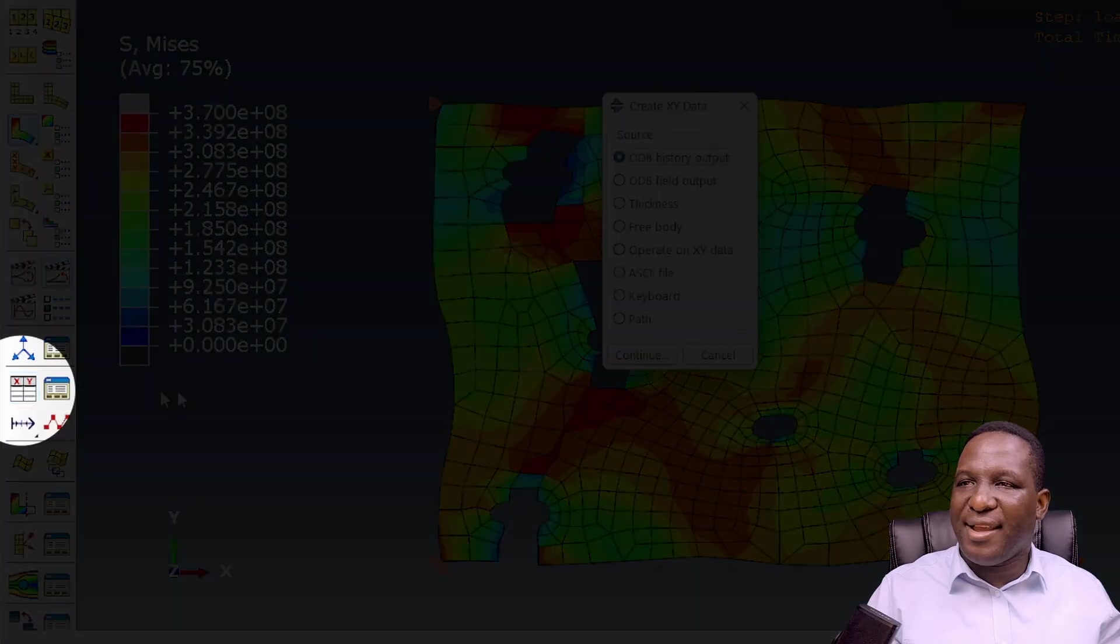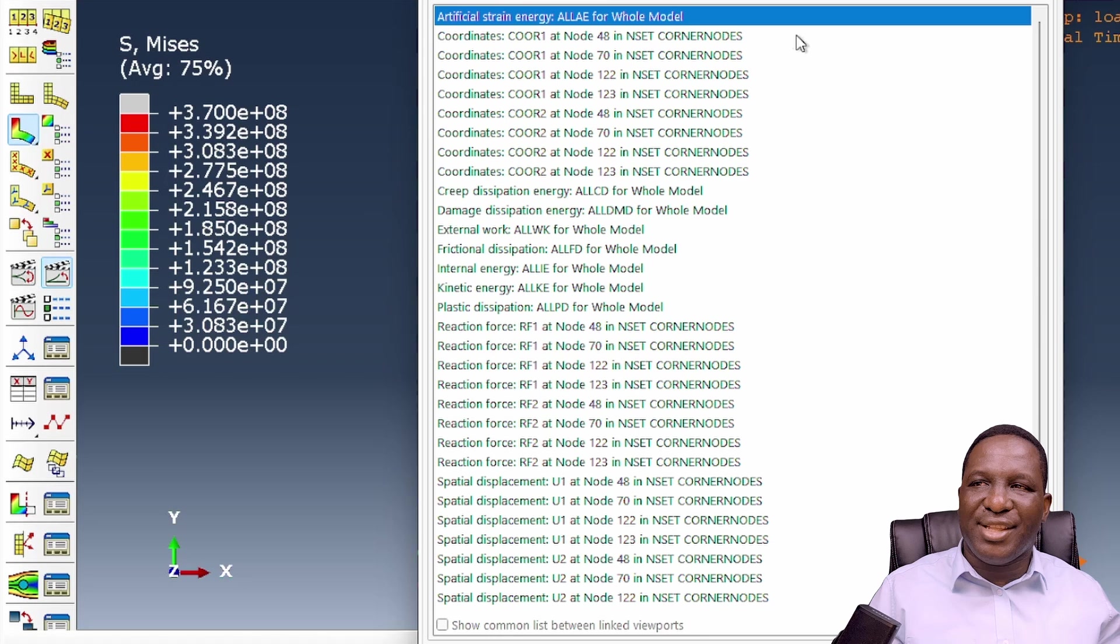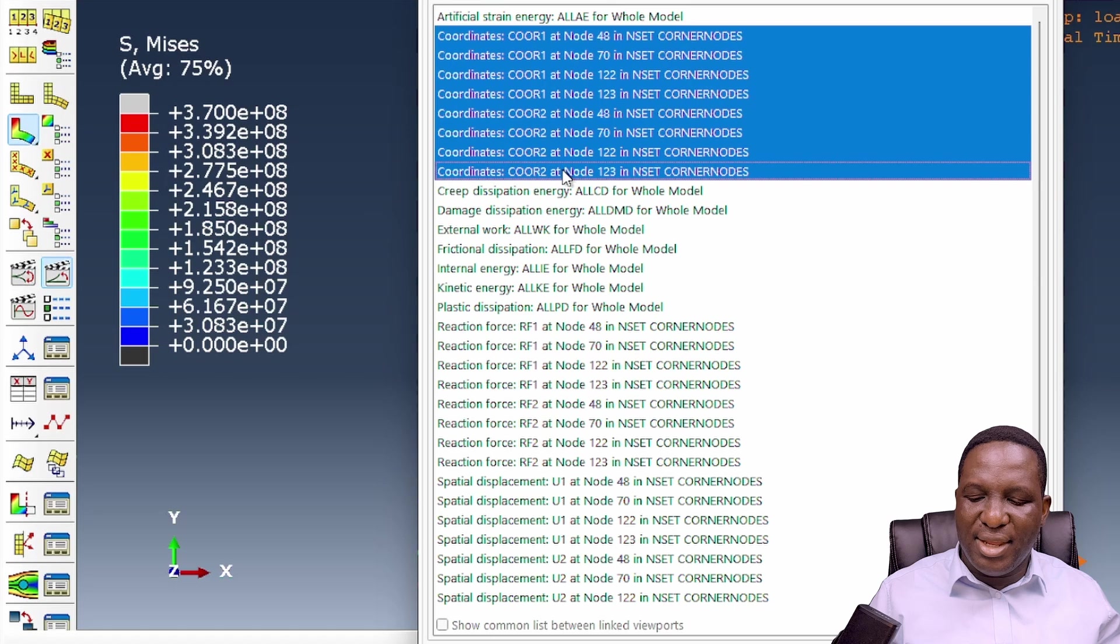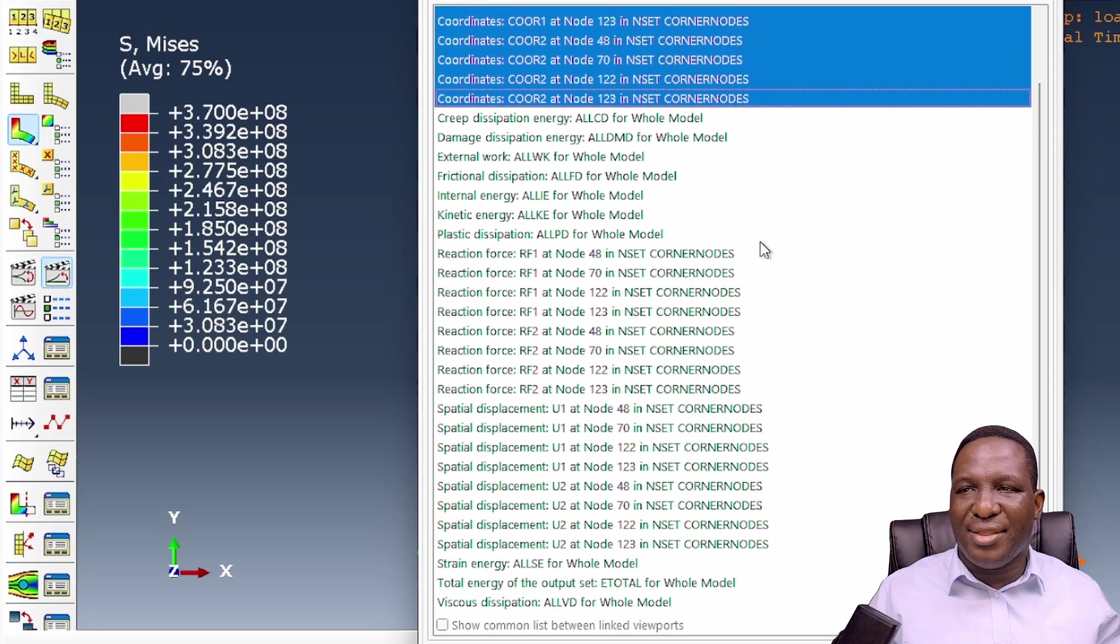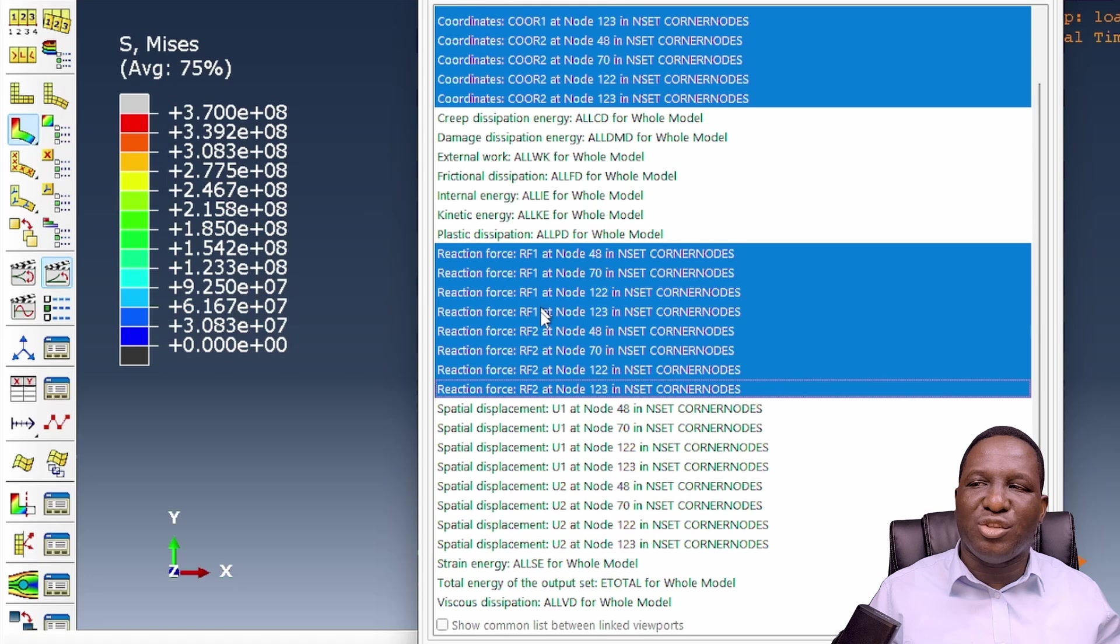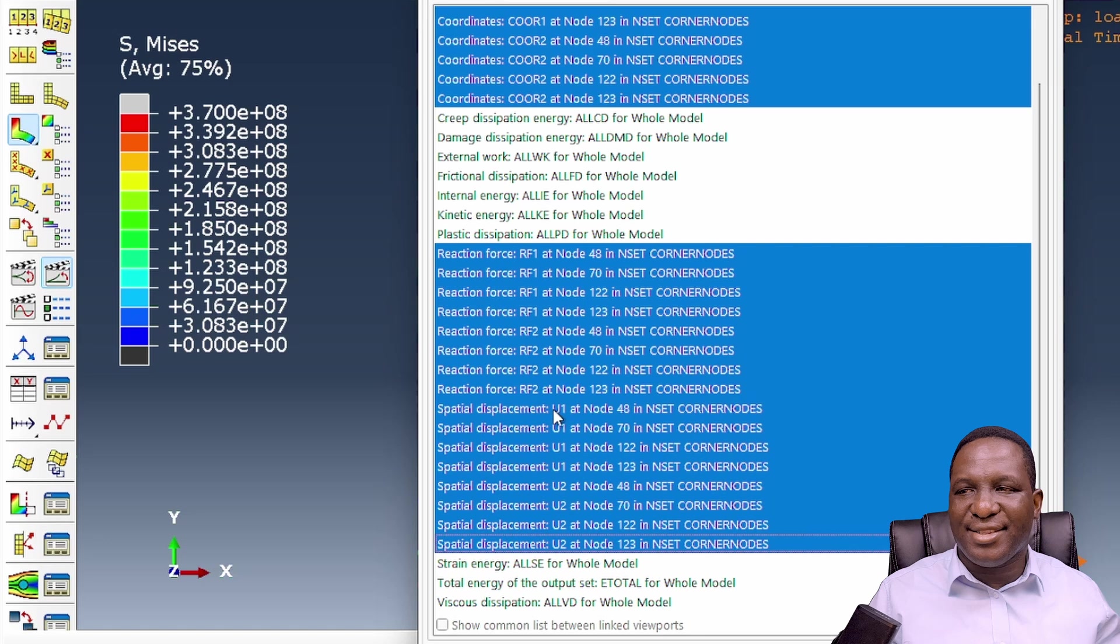If I create XY data and look at history variables, you'll see there's a lot of variables we asked for. For example, this is the coordinate position. I'll press and drag while holding down control to get coordinate 1 and 2 for all the corner nodes. Then I'll press down control again and drag from here—this is reaction forces in 1 and 2 for the corner nodes. Still pressing control, drag from here, and you've got displacement 1 and 2 for all those corners.